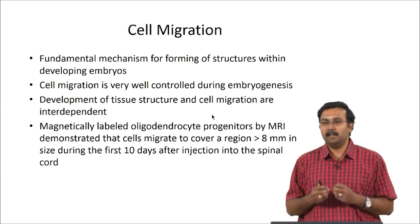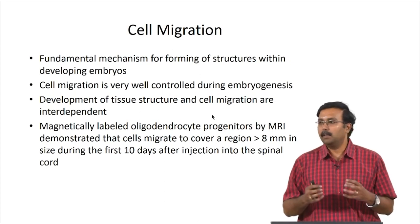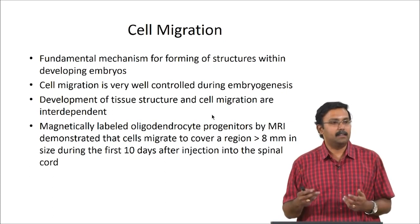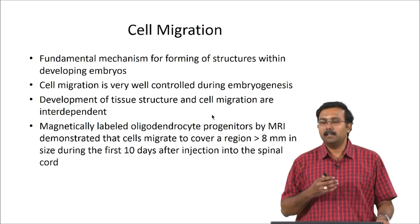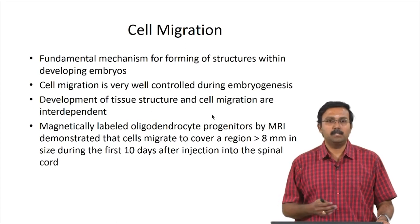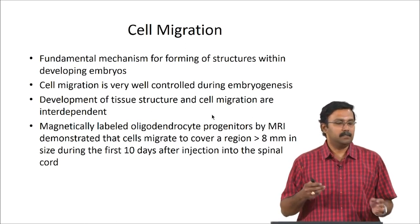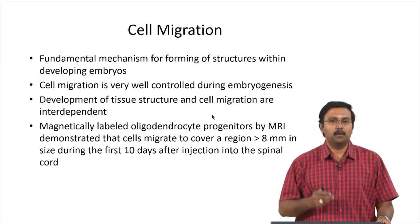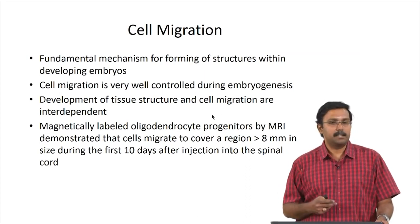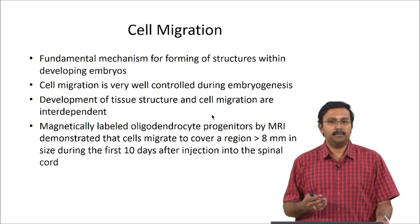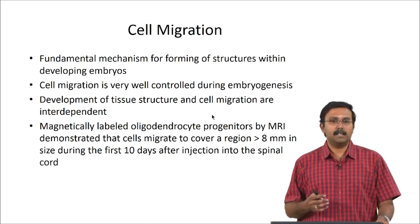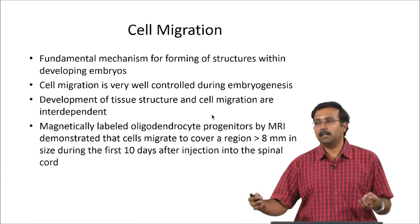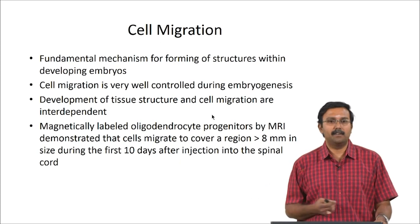Cell migration during embryogenesis is also very well controlled — that is why you end up with two eyes in the place where they are and a nose where it is. It is a very regulated process and this ensures that cell migration is controlled. Development of tissue structure and cell migration are interdependent — only when you have the cells migrating to a particular area can the tissues start developing.